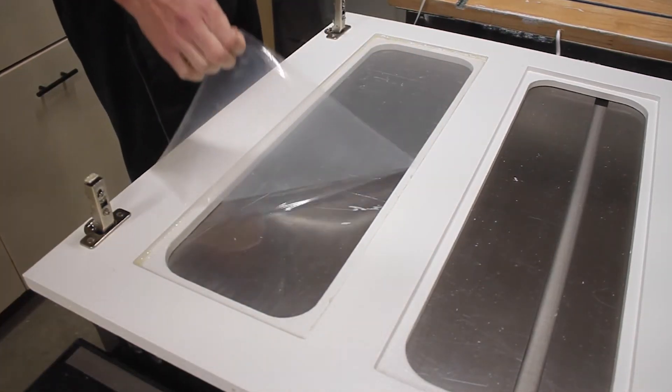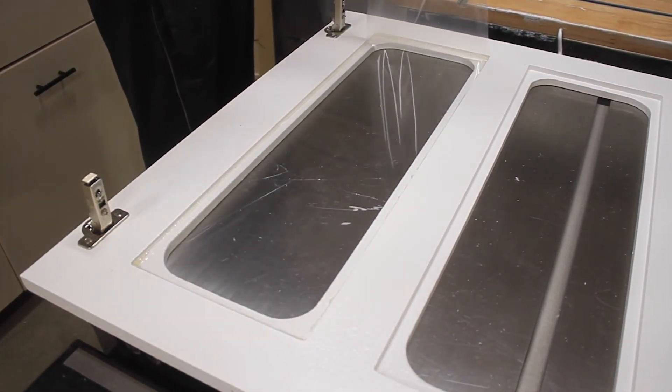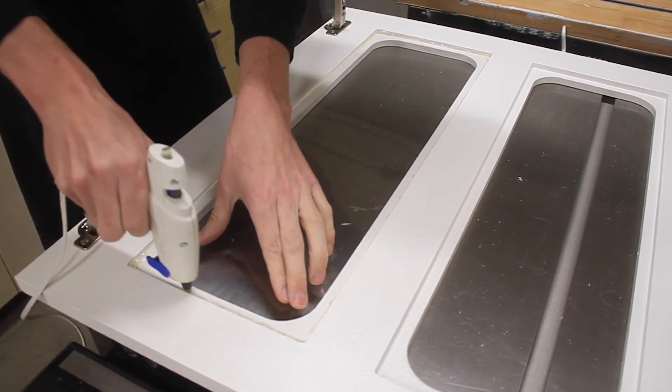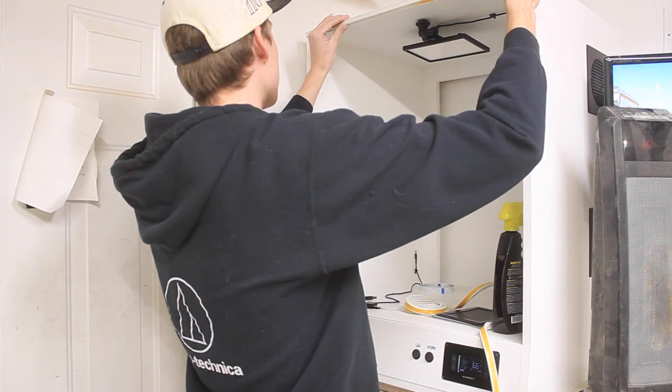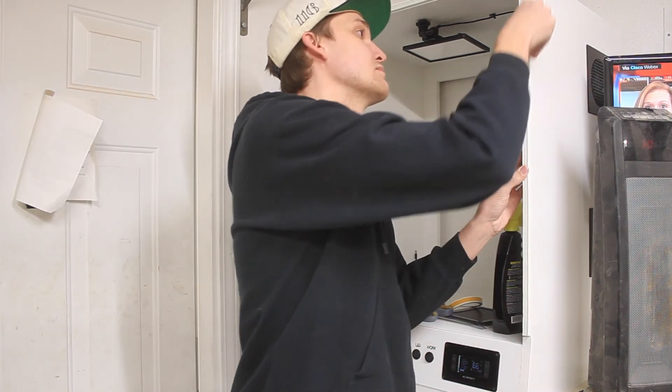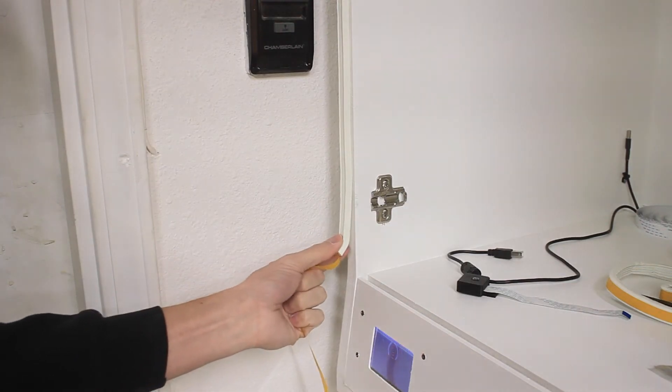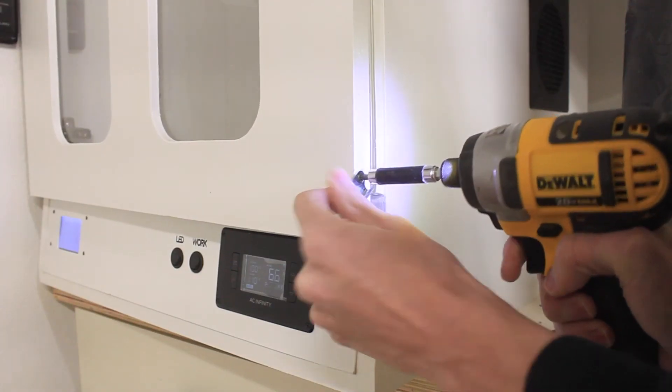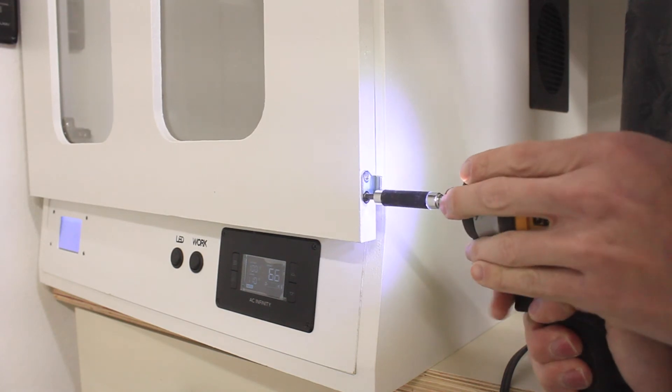And then I installed weatherstripping around the outside of the enclosure just so I got a really tight seal. The weatherstripping makes the door pop open so I installed some toggle latches as well that keeps everything closed and nice and tight.